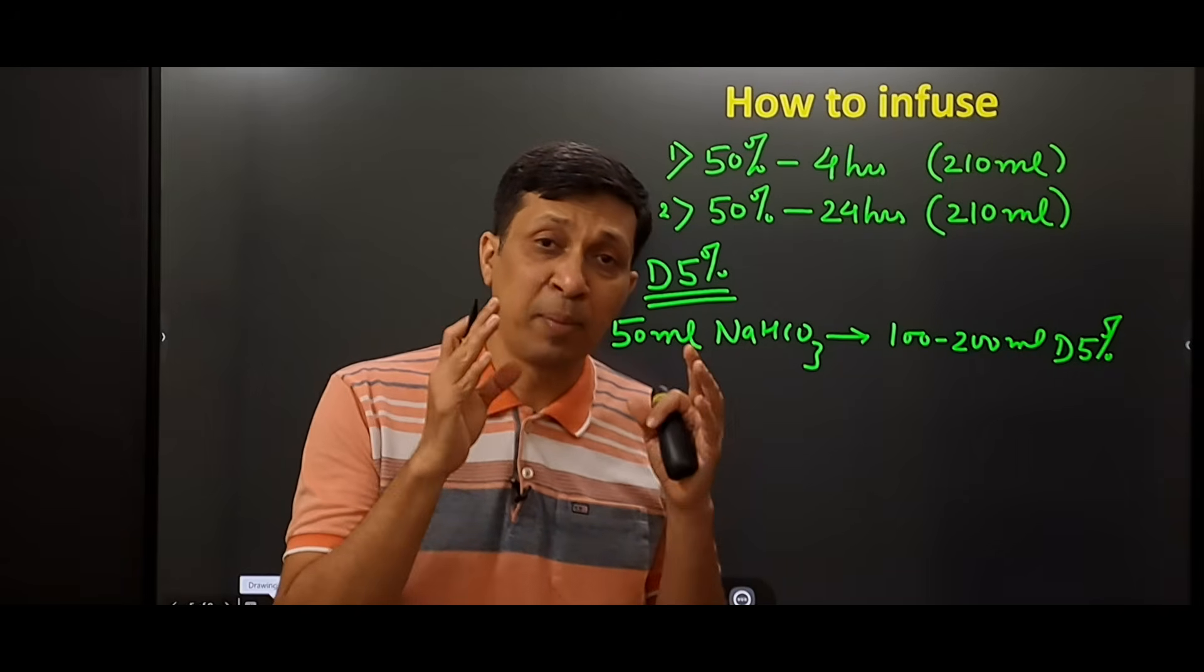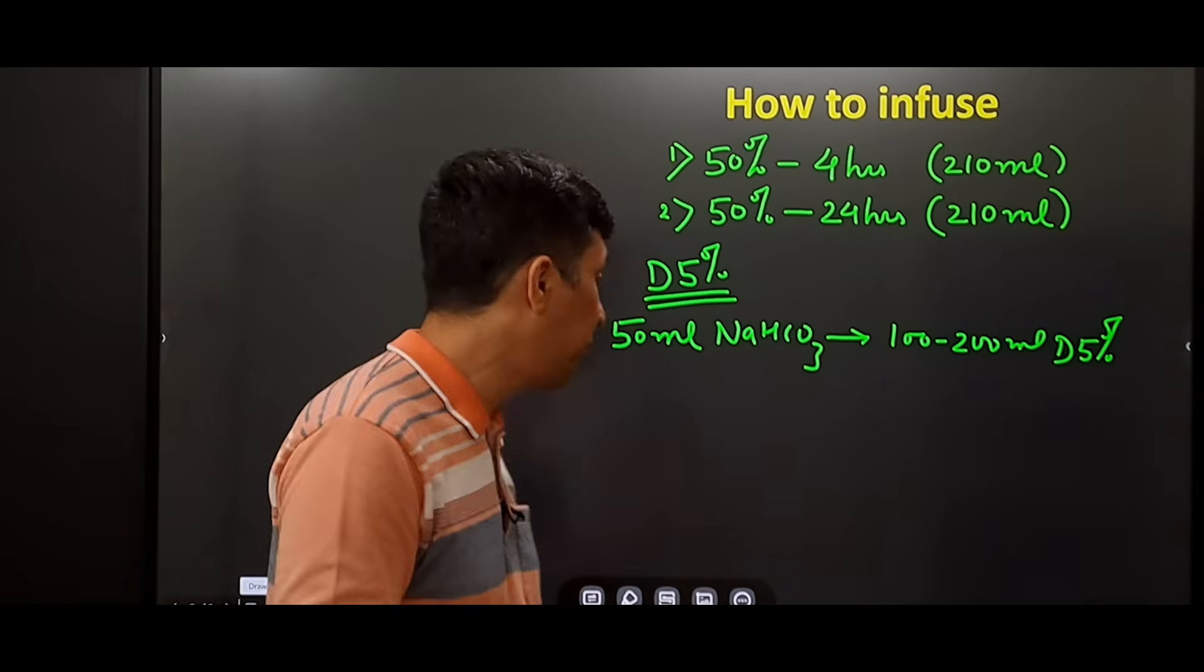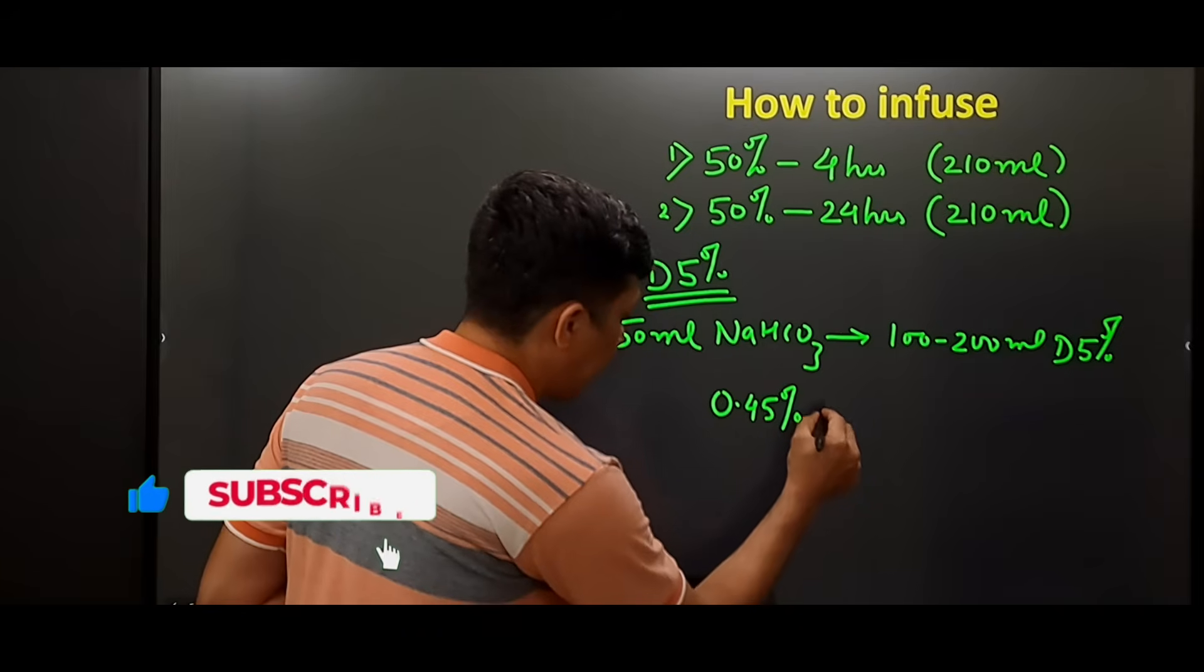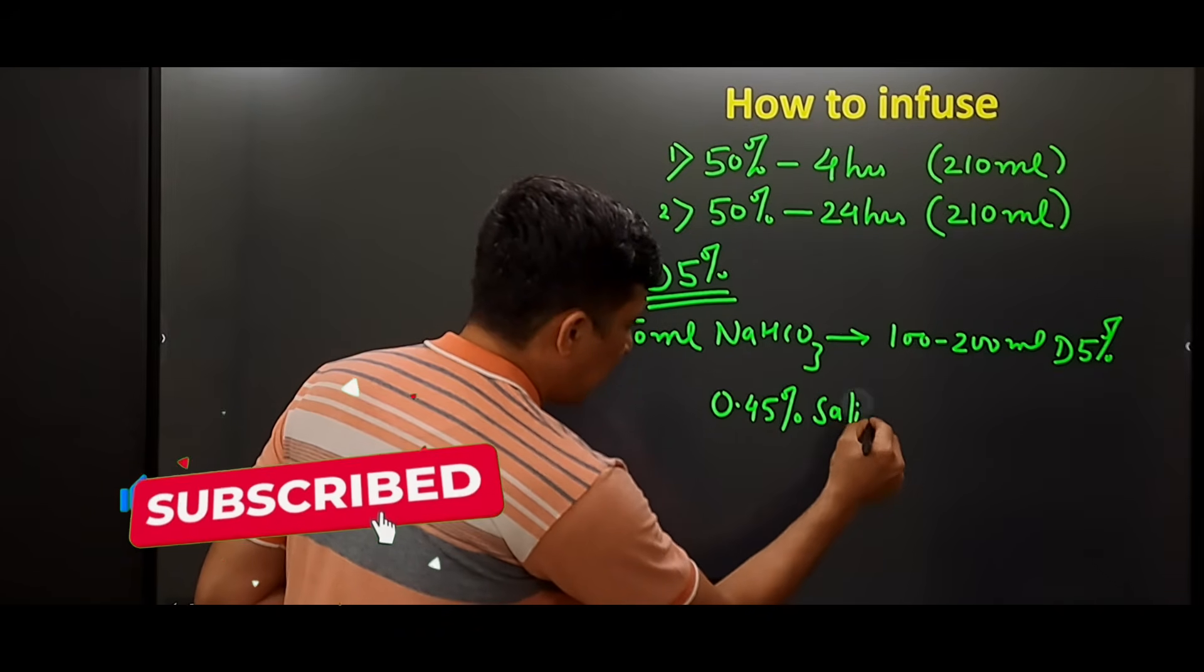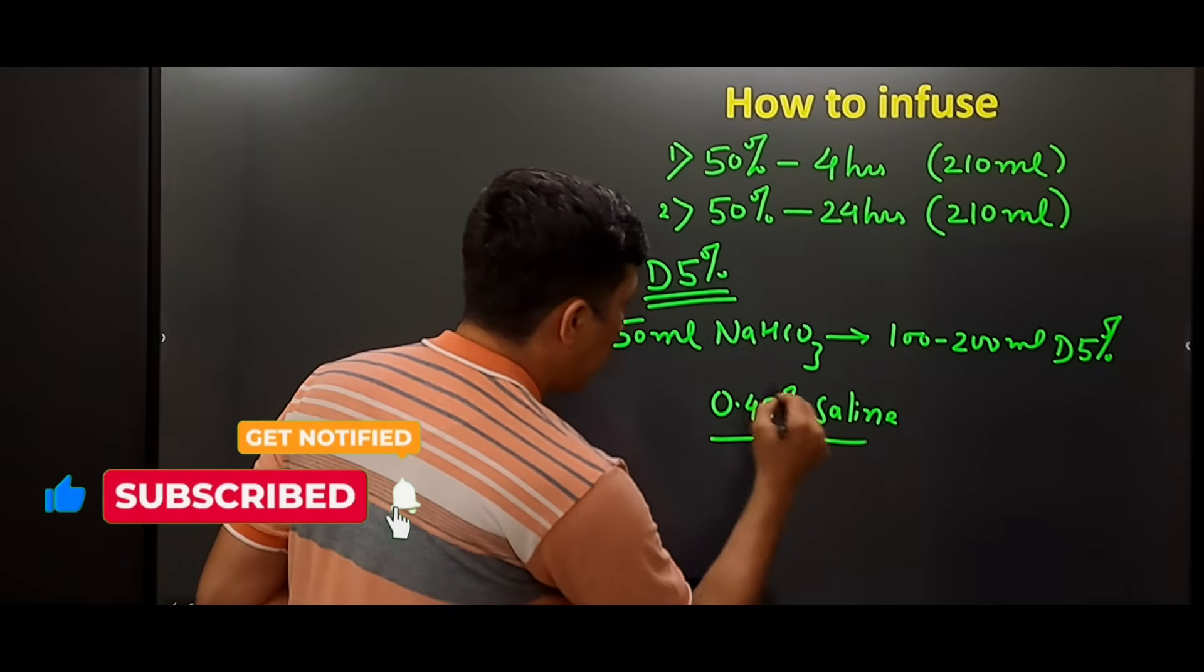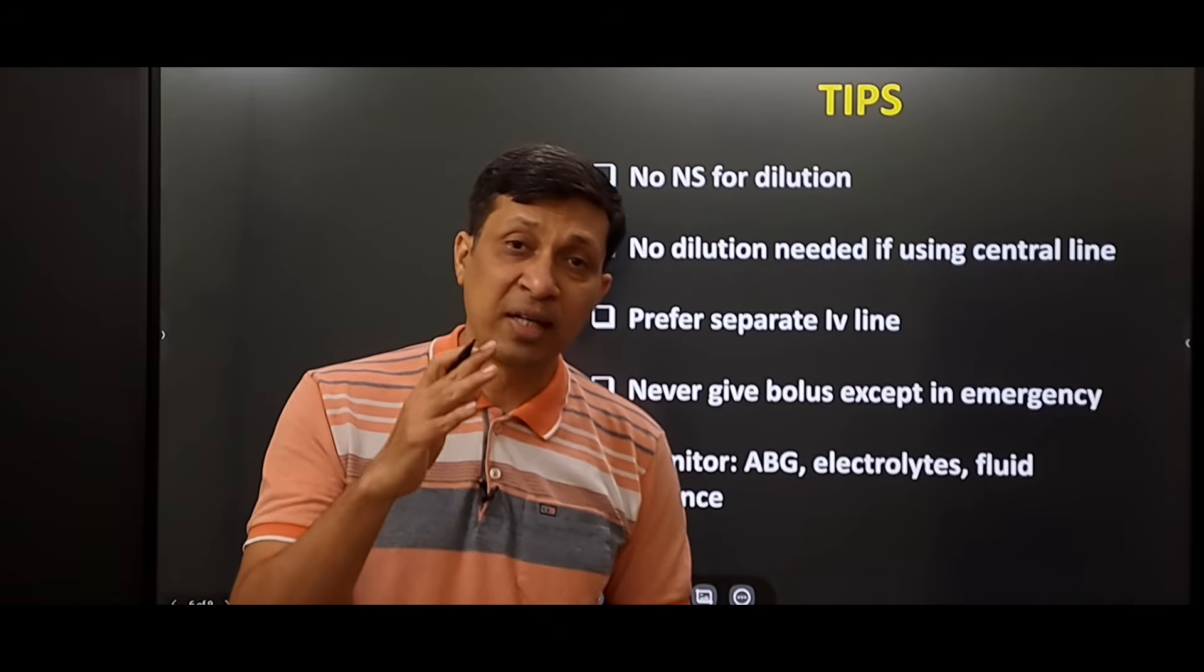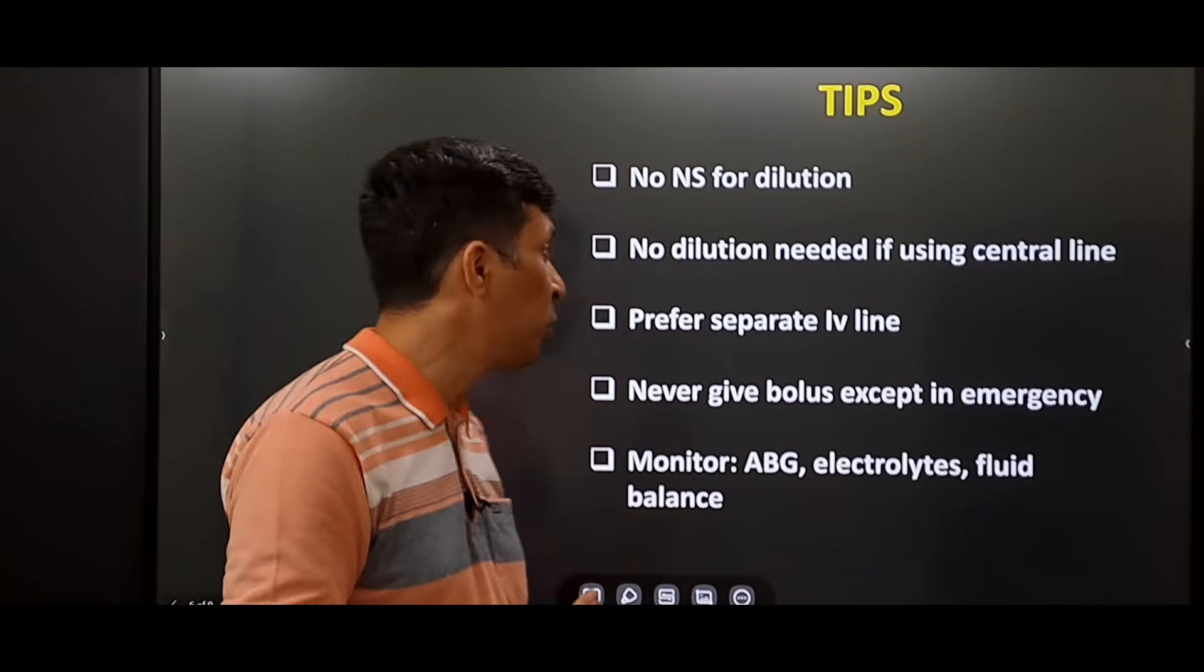If the patient is hyperglycemic, then we may have to dilute in 0.45% saline. This is an important thing that we have to keep in mind—the dilution. Now I will give certain tips on how to give this drug to patients.